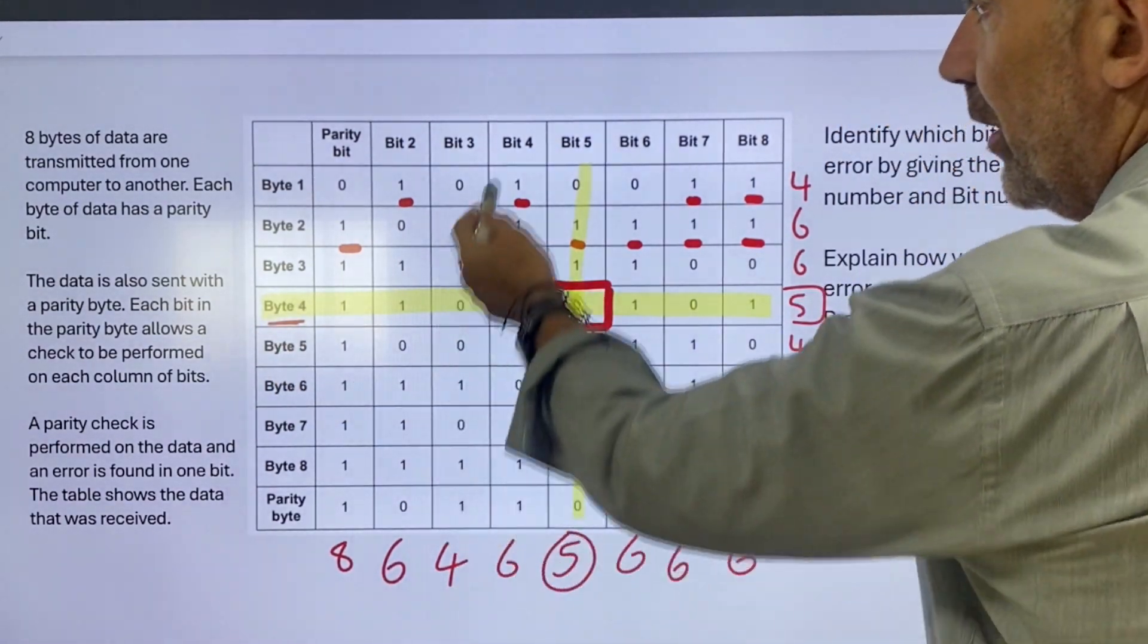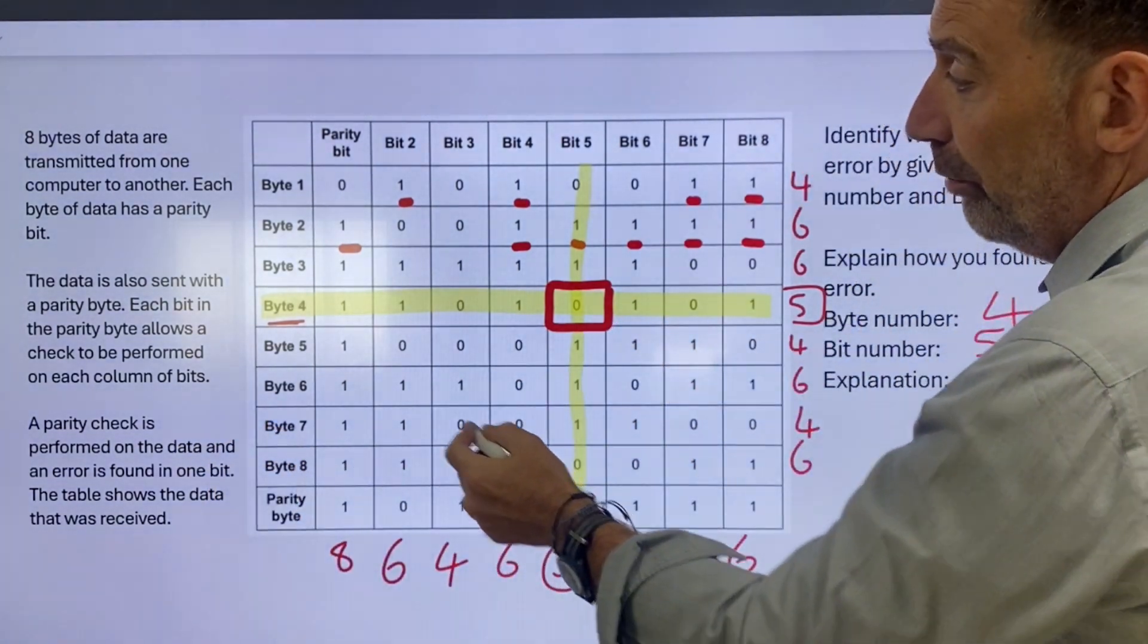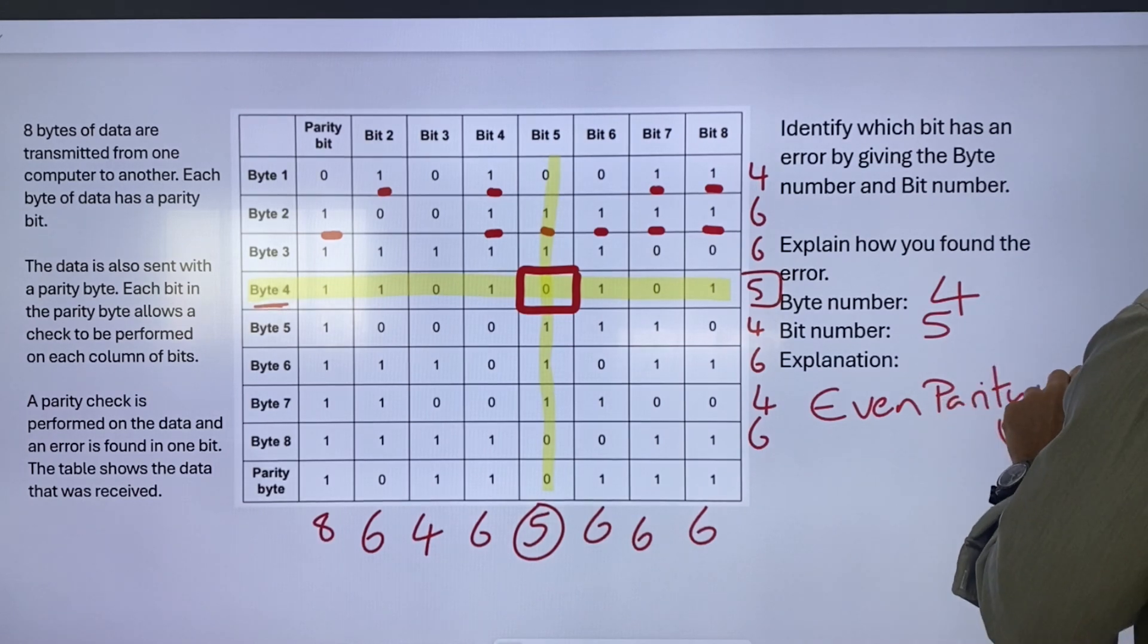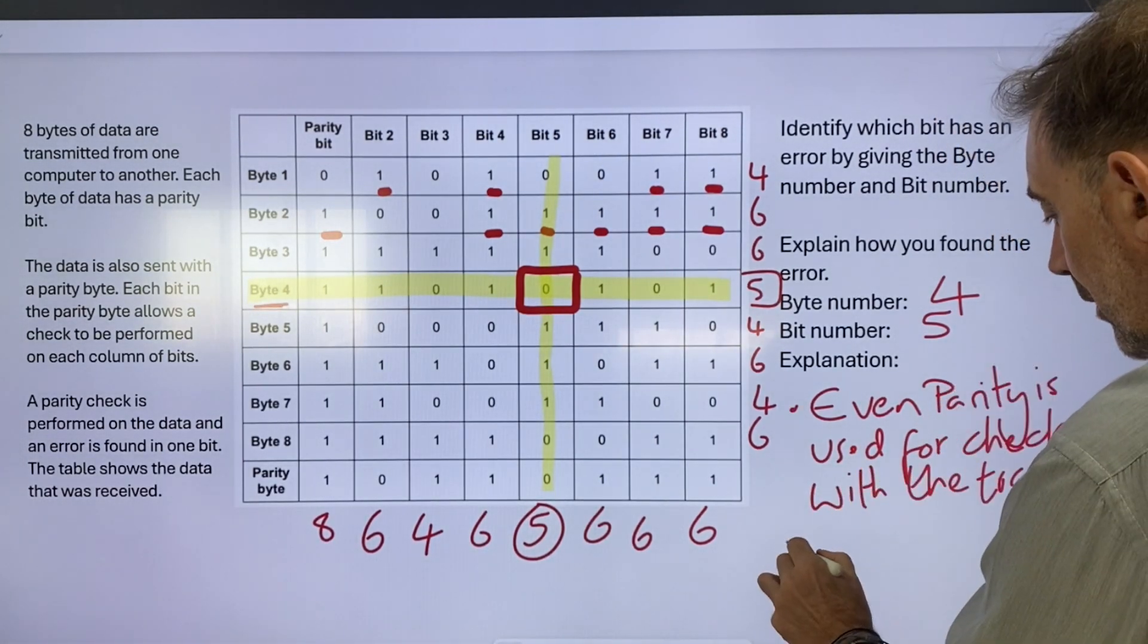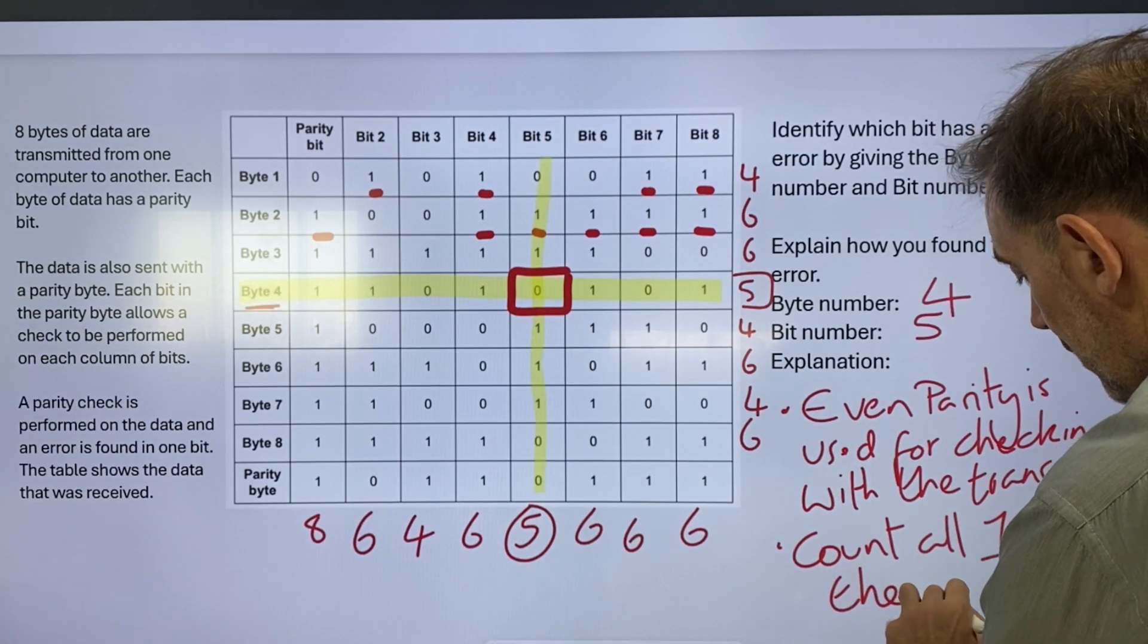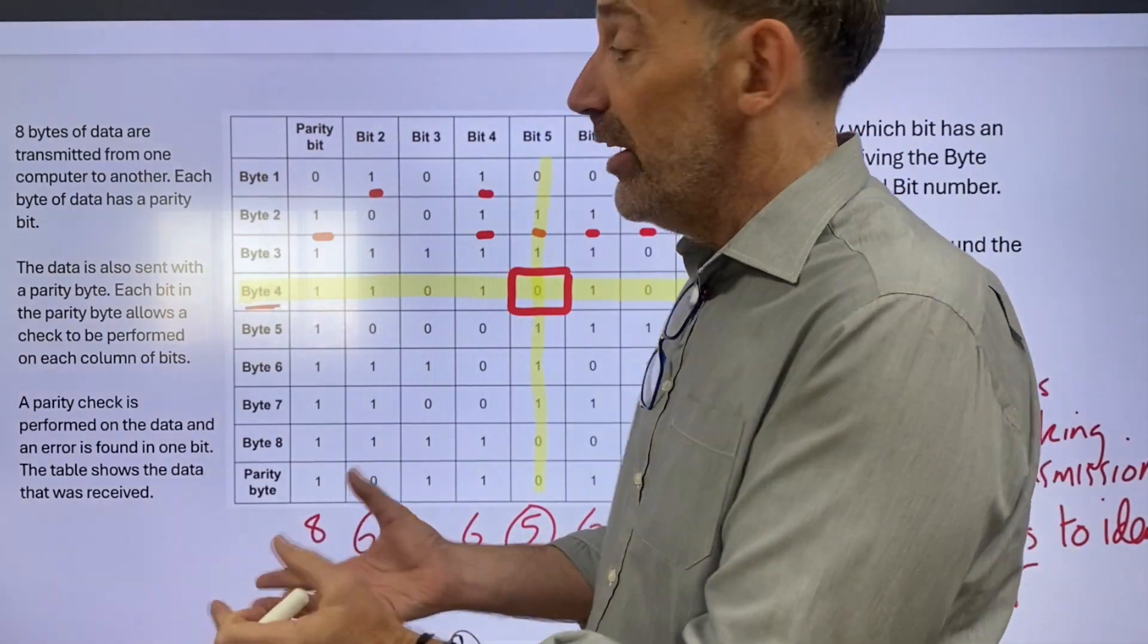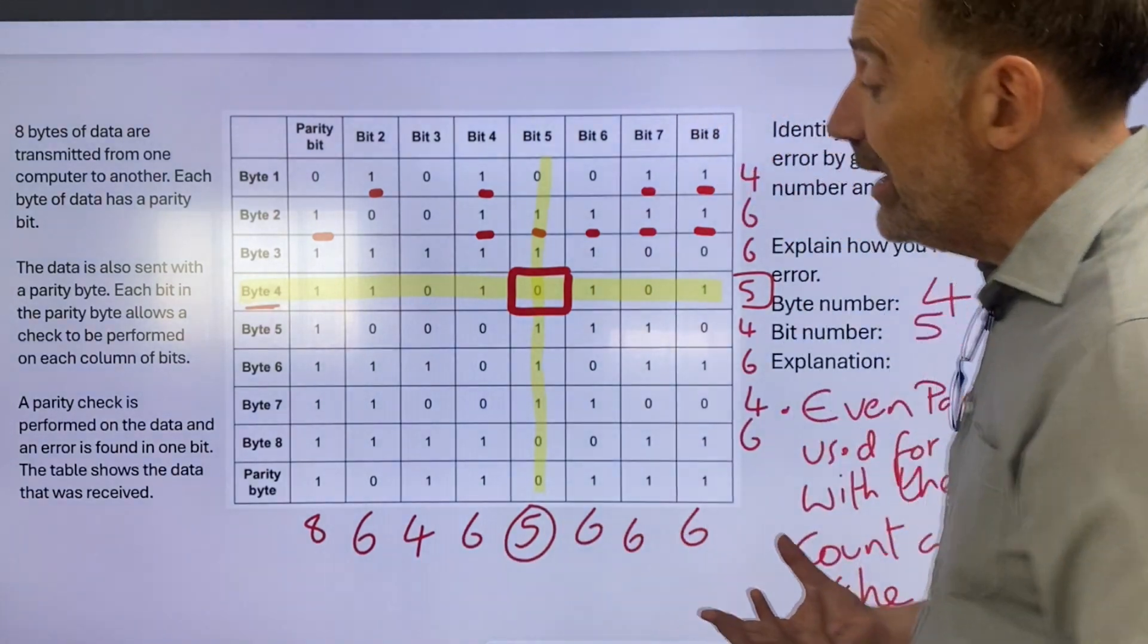So it's byte four and bit five. So in terms of the next, this question is for four marks. One mark for identifying byte, one mark for identifying the bit, and then two marks for an explanation. Well, even parity is used for checking with the transmission. Count all ones to identify error. So that's how we get four marks on that. Nice and easy. Sometimes it tells you whether it's odd or even parity, which makes it even easier. But in the case of this one, process of elimination, are they using odd parity or even parity? In this case, they're using even parity.